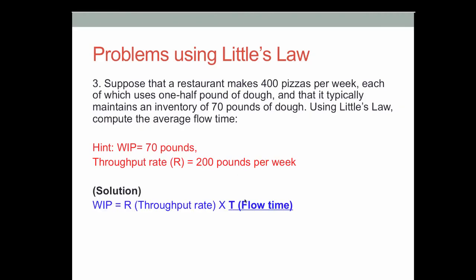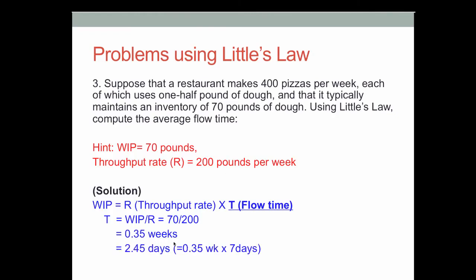Here is the solution: WIP equals throughput rate R times flow time t, so flow time equals WIP divided by throughput rate. That is 70 pounds divided by 200 pounds per week, which gives 0.35 weeks. Converting to days by multiplying by 7 days gives approximately 2.45 days, or about 2.5 days.